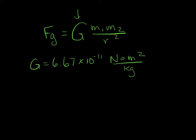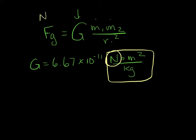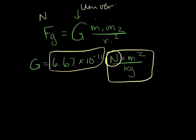The function of the units is just to cancel everything else out — the meters for our radius and each of our kilograms — so that we're left with Newtons, which is the unit we want our force in. So don't worry too much about those units; focus on the number. G is always, because it's the universal gravitational constant, 6.67 times 10 to the minus 11.